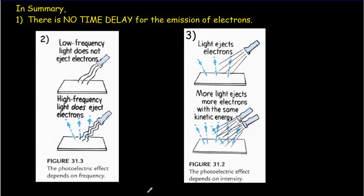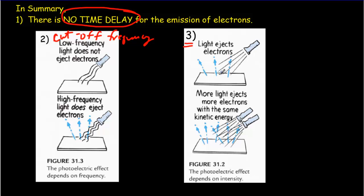Let's briefly review: first, no time delay — electrons are emitted immediately. Second, there is a cutoff frequency, so if the frequency is not high enough, photons don't have enough energy and no electrons come out. Third, more light — that is, more photons — ejects more electrons, but they have the same kinetic energy. Quite different from the wave model.